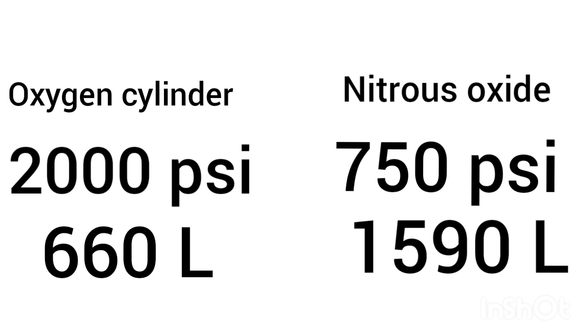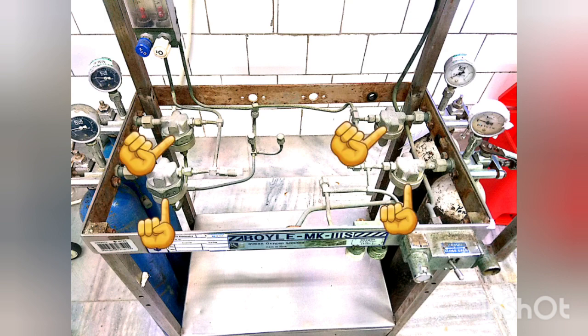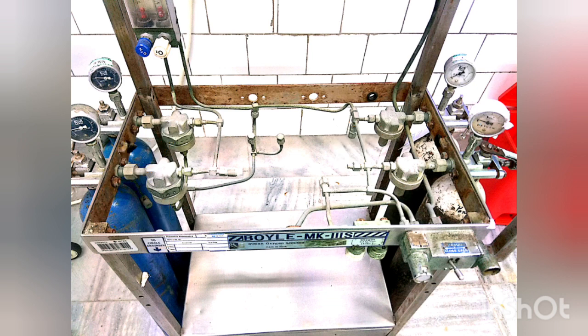After the gas cylinders, the next important feature of the Boyle's machine is the pressure reducing valves. These reduce the high pressure of the gas cylinders — 2,000 psi in case of oxygen cylinders and 750 psi in case of the nitrous oxide cylinders — into 45 to 47 psi.